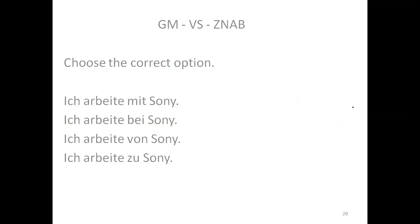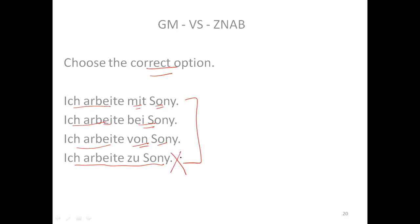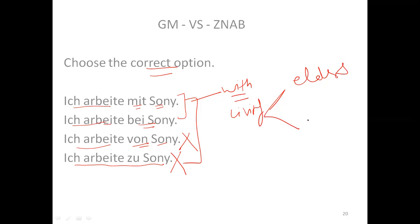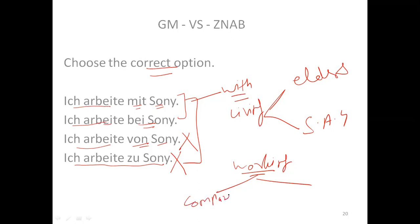For the exercise: 'Ich schreibe mit einem Stift' — I write with a pen. Neither living nor working, so rest-all-cases: mit. 'Fährst du mit einem Auto?' — do you travel by car? By means of transport uses mit. Auto is neuter, so the dative indefinite article is einem. For the multiple choice: 'Ich arbeite bei Sony' — I work at Sony. Sony is a company, so bei is correct, not mit.